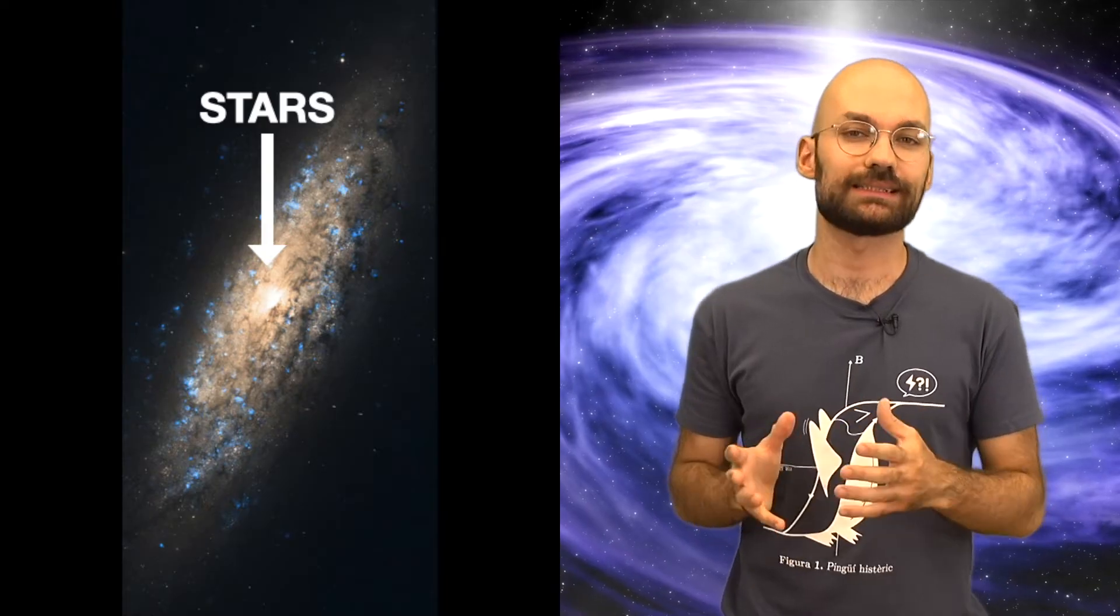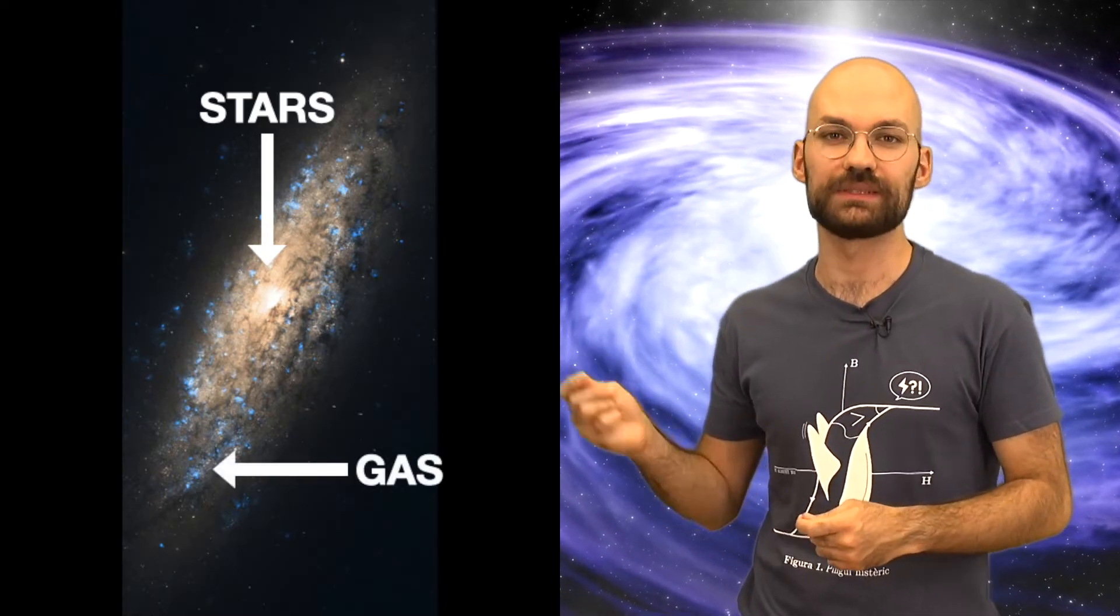In the same way, gravity is responsible for the Sun rotating around the center of the Milky Way. Let us take a look at this particular galaxy. We see that it is mainly formed by two components: the stars, which we recognize from the light, and the gas, these dark clouds that we see in the surroundings.